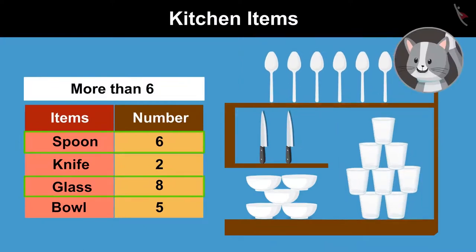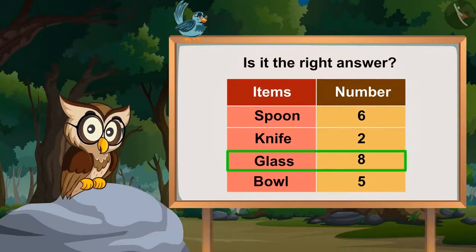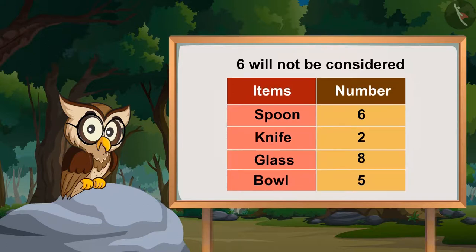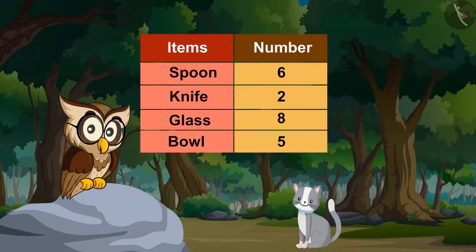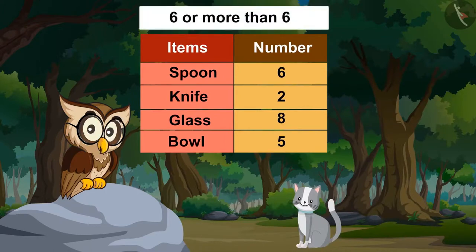Spoon and glass. Is it the right answer? I think just the glass, because you asked more than 6. Therefore, we cannot consider 6. Absolutely right. While counting more than a particular number, the number itself is not considered. But if I had asked which kitchen item is more than or equal to 6, then your answer would be correct.